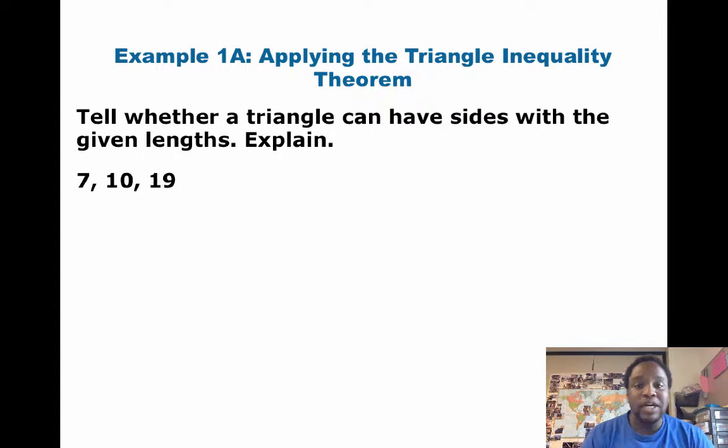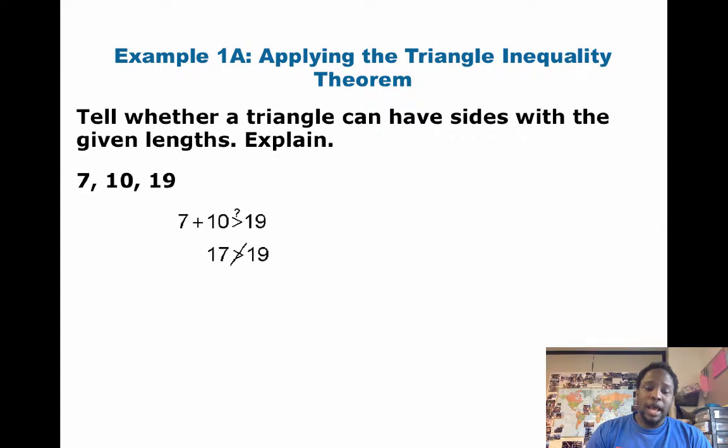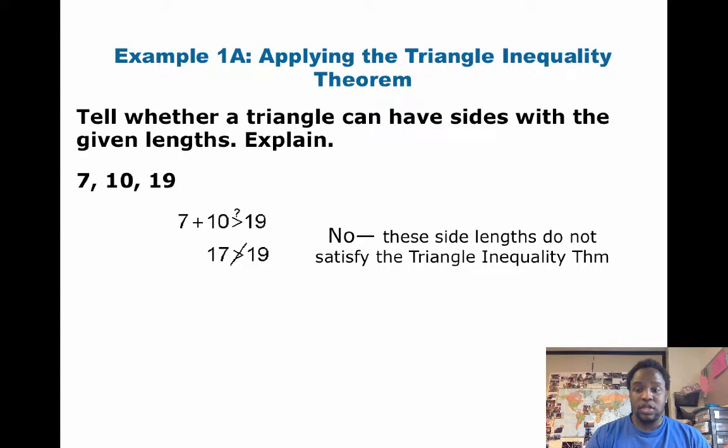So, let's look at example 1a, applying the triangle inequality theorem. Tell whether a triangle can have sides with a given length: seven, ten, nineteen. So, seven plus ten is seventeen, which is not greater than nineteen. So, therefore, we know that this triangle won't work. The side lengths do not satisfy the triangle inequality theorem.